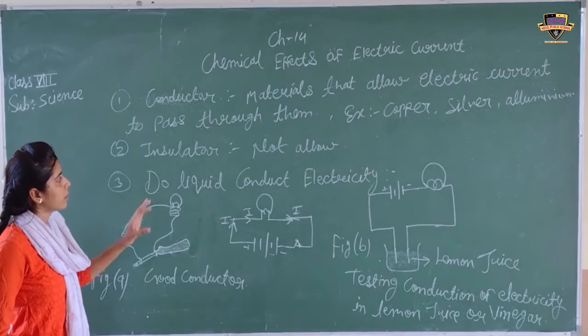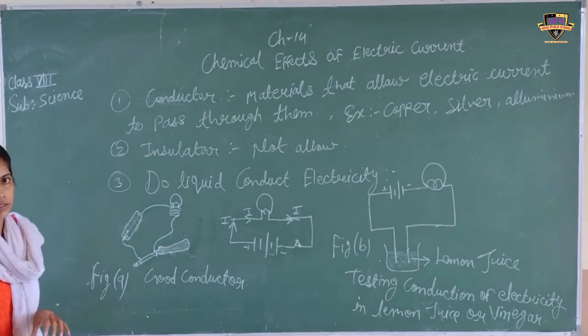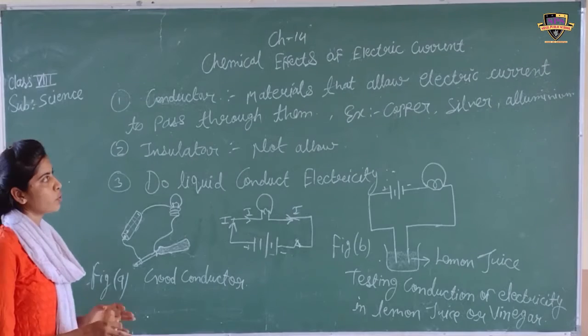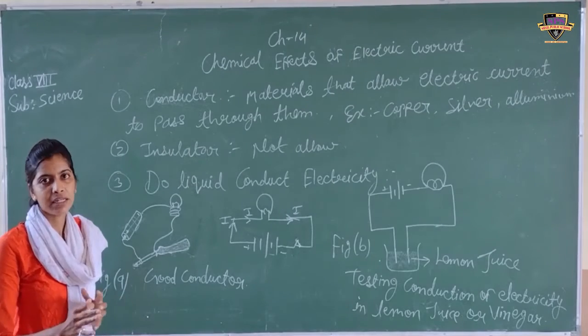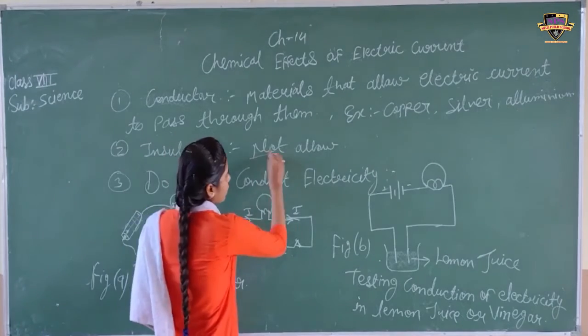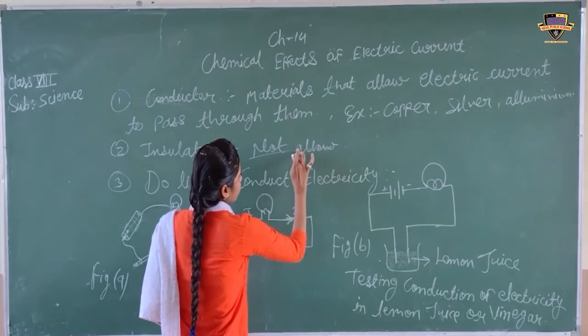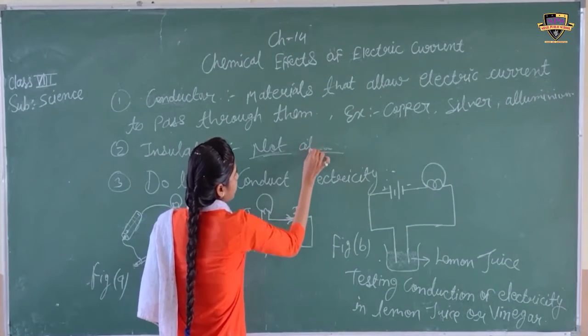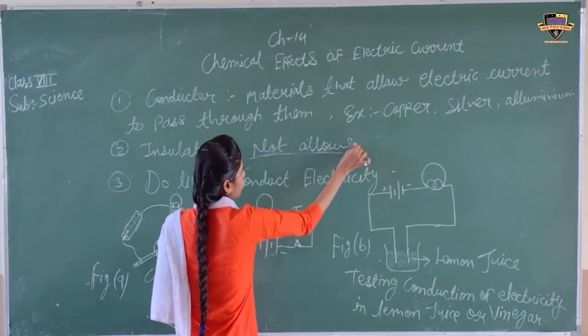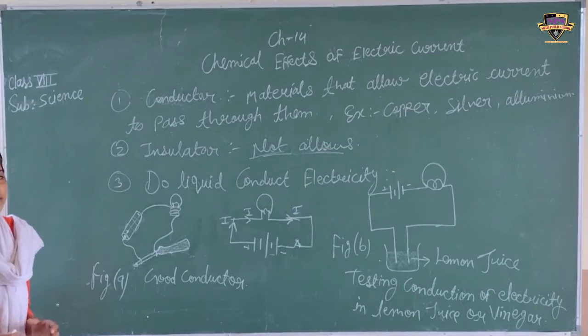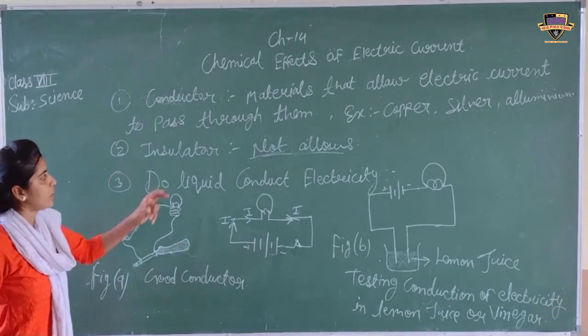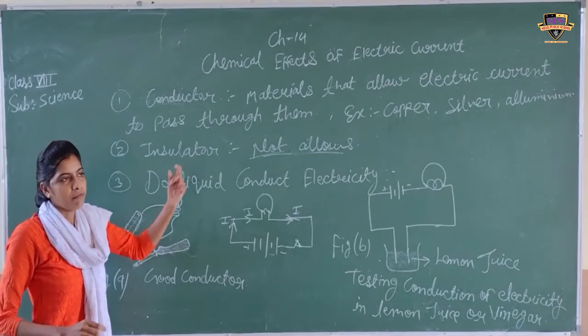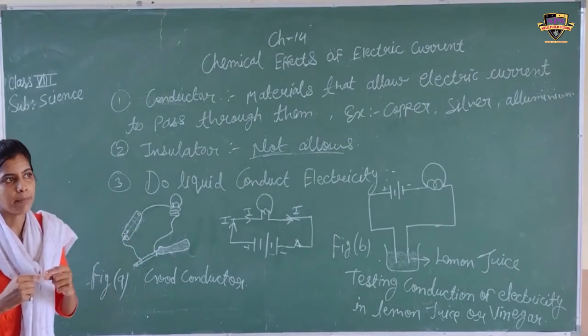Now we are going to study the insulator. Insulator - what happens? Insulator is the case when electric current pass is not allowed. The electric current cannot pass through insulators.